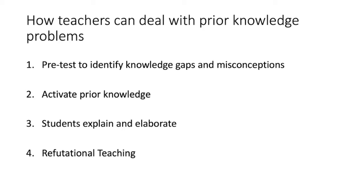Second, activate students' prior knowledge. Sometimes students have relevant prior knowledge but don't remember it or use it in class as needed. A simple way to activate prior knowledge is to ask students at the start of class to write brief descriptions of major concepts relevant to that class period. Third, have students explain and elaborate. Teachers can use activities that involve students in explaining and elaborating the course material — study questions answered before class or in-class activities in which students explain concepts to one another. Explaining their ideas helps students expand their understanding and also identify gaps, inconsistencies, and inaccuracies in their understanding.